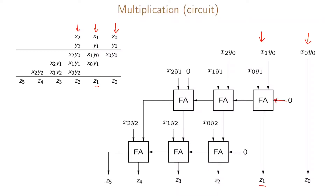The next part of the circuit adds three numbers: x0·y2, x1·y1, and x2·y0, and it also takes the carry from the previous addition. This gives us z2, and so on. At the end, z5 is produced as the final carry from the circuit.